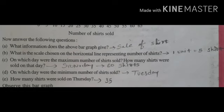On which day were the minimum number of shirts sold? The fewest shirts — look at the graph, you can see that Tuesday has the least, it is the smallest bar. Next, E: how many shirts were sold on Thursday? If you read the scale carefully, it comes to exactly 35.